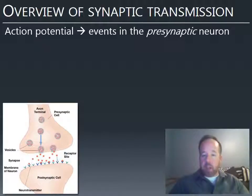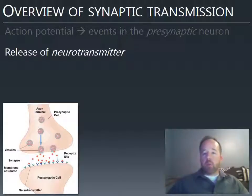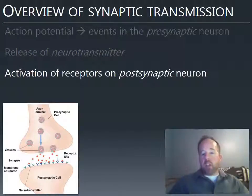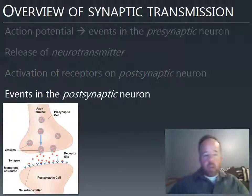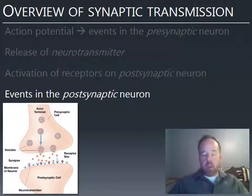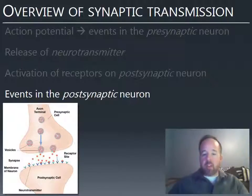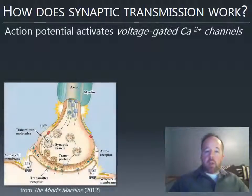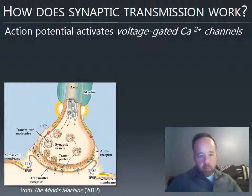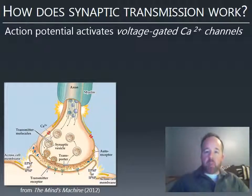Here's an overview of synaptic transmission: an action potential leads to events at the axon terminals of the presynaptic neuron, causing release of neurotransmitter into the synaptic cleft. The neurotransmitter diffuses across the synapse and activates receptors on the postsynaptic neuron, causing either ions to flow in or a complex chemical cascade to begin. That's the basic sequence of events.